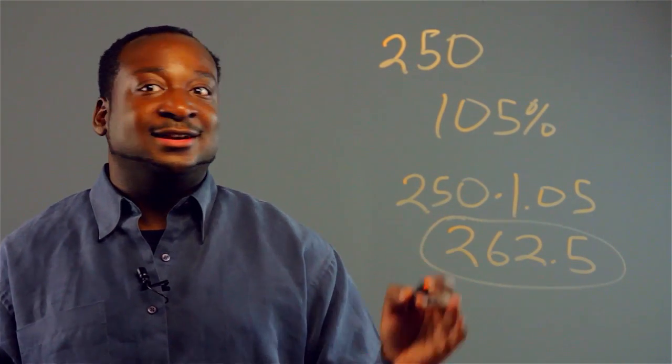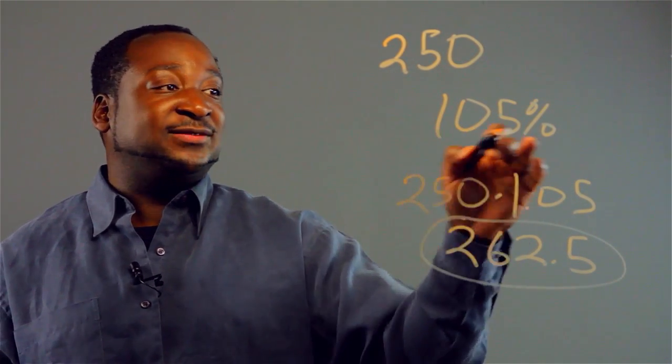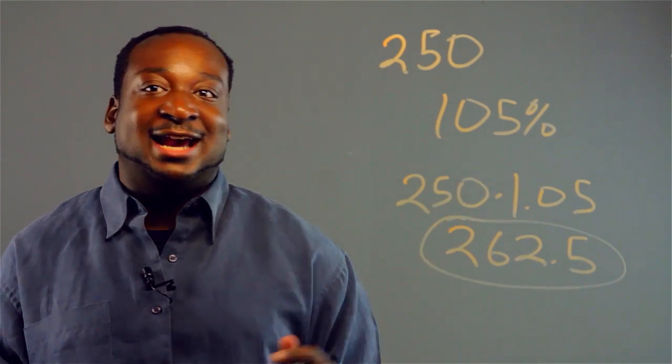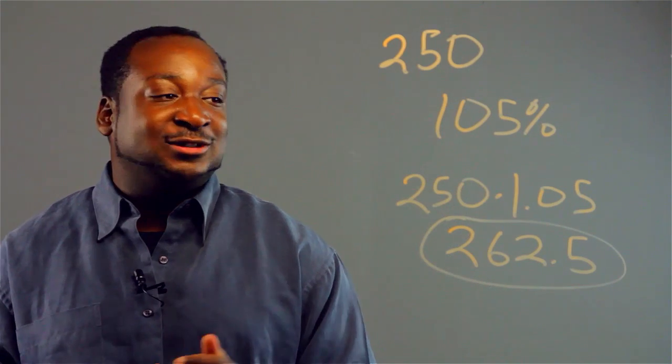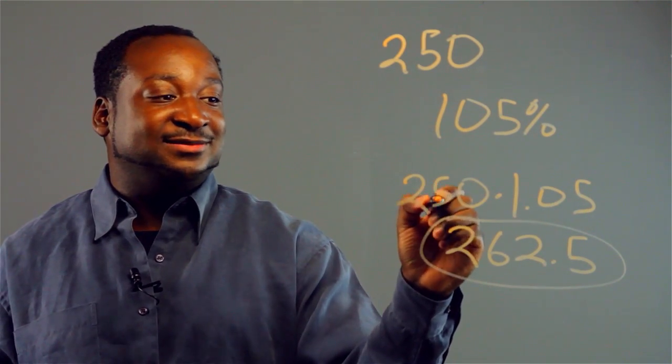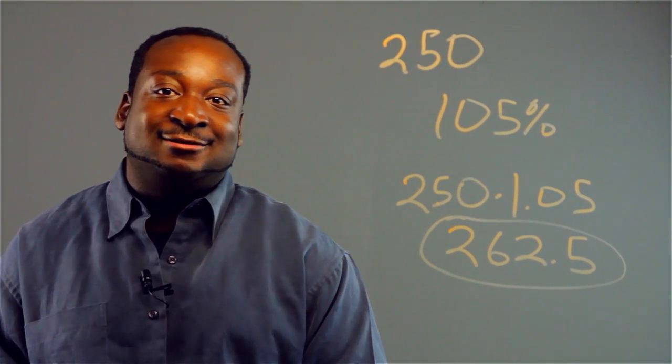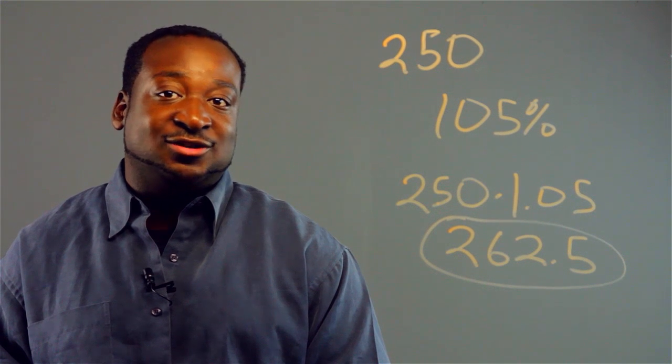So there you have it. The 100 plus the 5%, you add them together, 105%, and you multiply that times the amount. And that's how to compute simple interest.